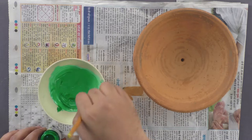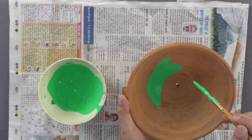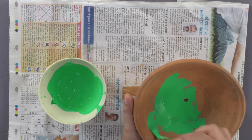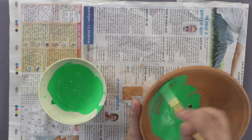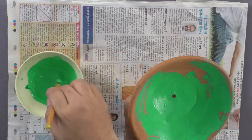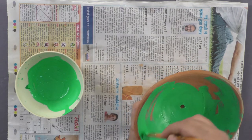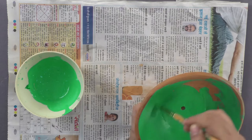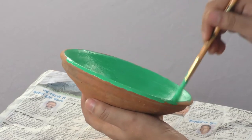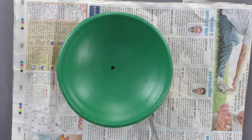Next, take green fabric color in a bowl and paint the earthen bowl with it. Leave the painted bowl to dry.